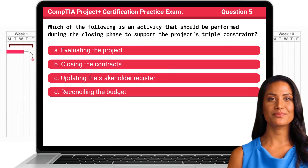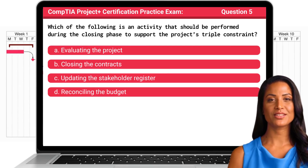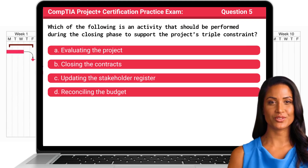Question 5. Which of the following is an activity that should be performed during the closing phase to support the project's triple constraint?